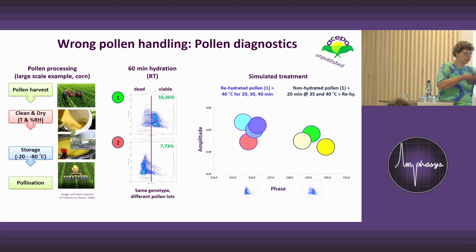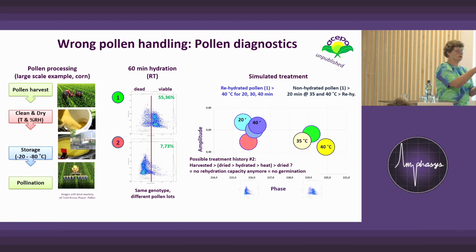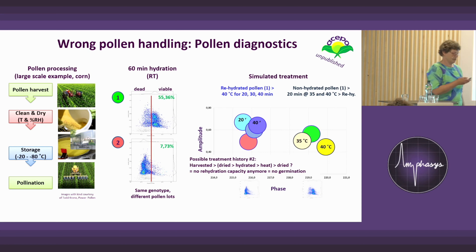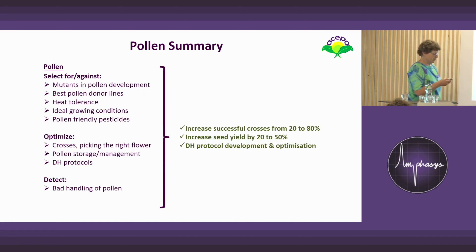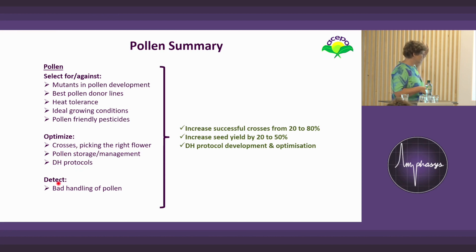So we can use this as pollen diagnostics or to improve storage protocols. The likely explanation is that the pollen had regained some water simply by mixing newly harvested pollen into an old sample and then putting them back into the dryer — and you get this mess. In summary, you can screen mutants, identify the best pollen donors, assess heterosis, growing conditions, and pollen-friendly pesticides. You can optimize crosses by picking the right flower, storage, age protocol, and detect bad handling of pollen.